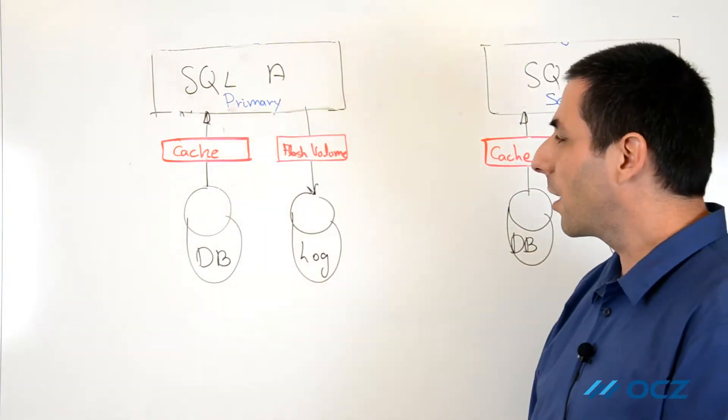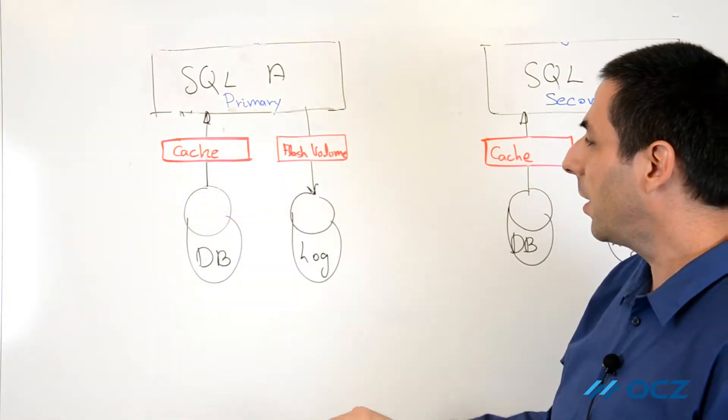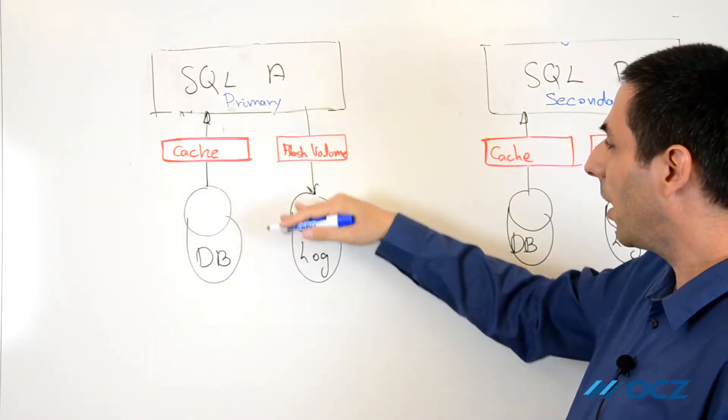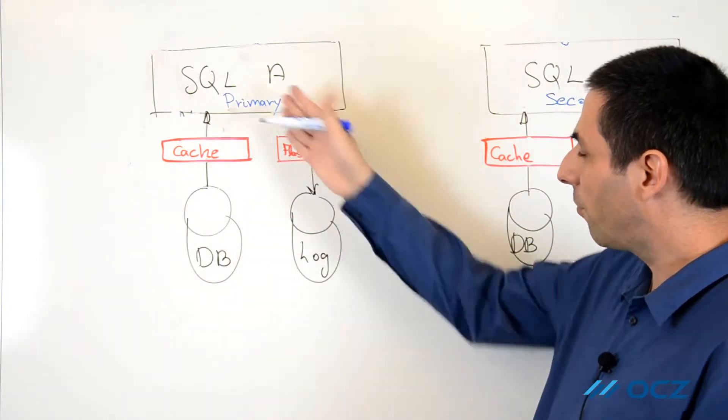As we saw, we can accelerate a SQL server using the ZDXL by caching the database data and placing the log file on a flash volume. This accelerates the performance of the SQL server.